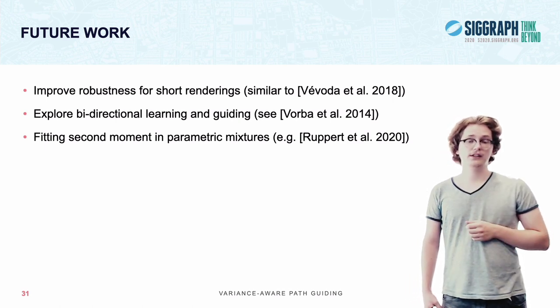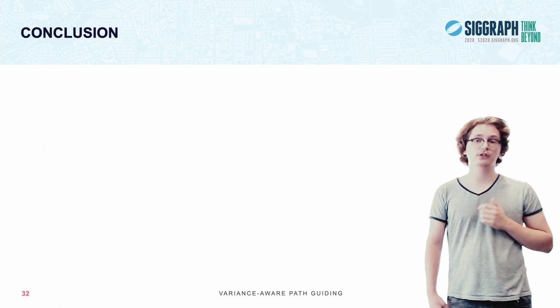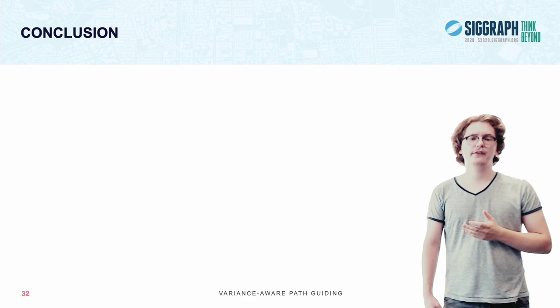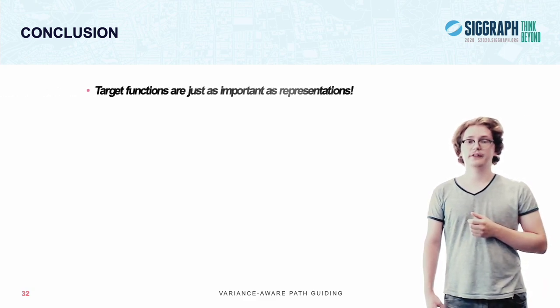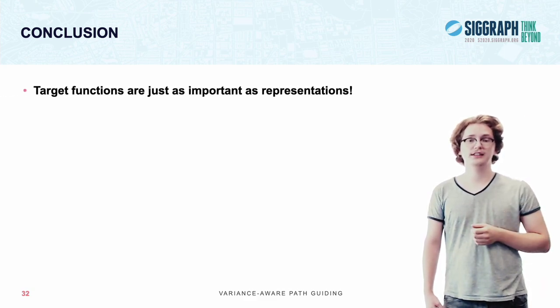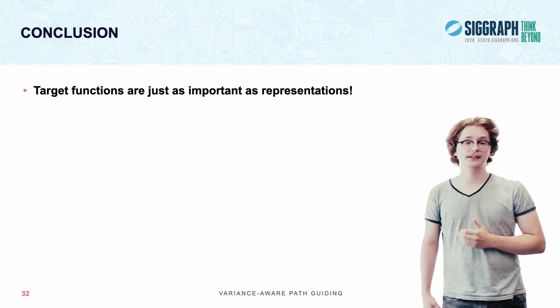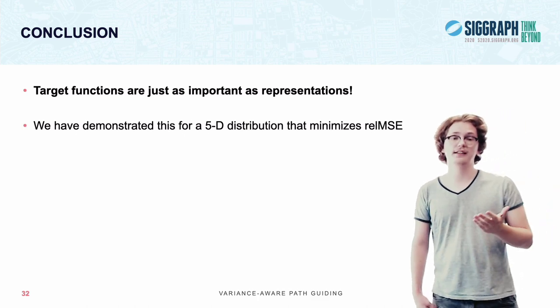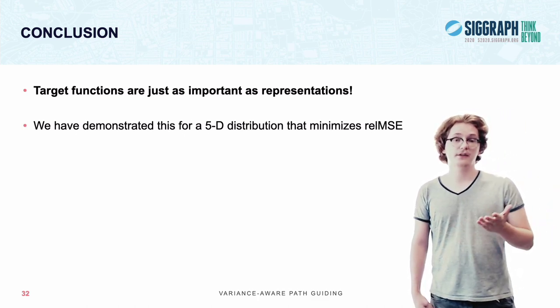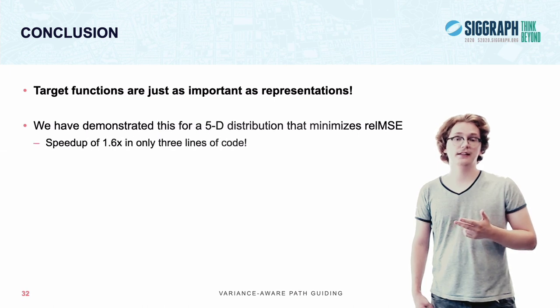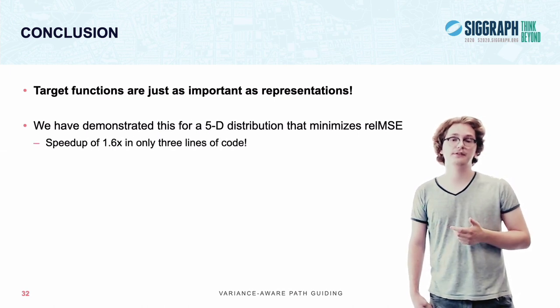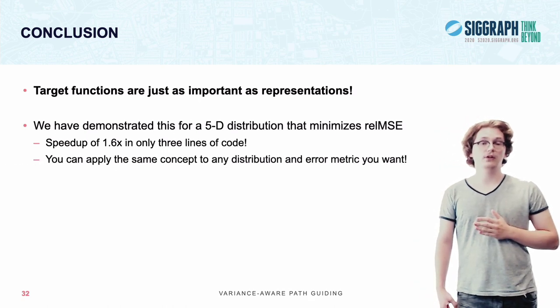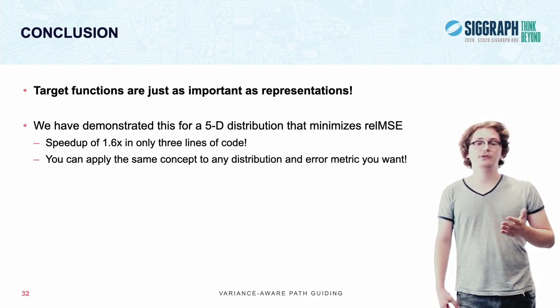Now, that's all the content I've got for you today. With that, I'd like to conclude this presentation. And the main thing that I'd like you to take away from this presentation is that choosing a good target function is equally as important as choosing a good representation to approximate it. We've shown this for the five-dimensional case that minimizes relative mean square error. However, we've shown that you can achieve significant speed-ups with only three lines of code. However, you can still apply the same concept also to other distributions or any error metric that you want.